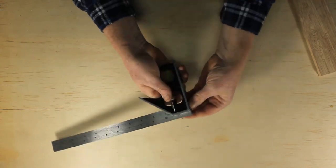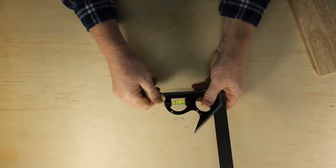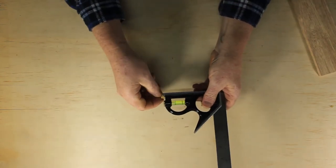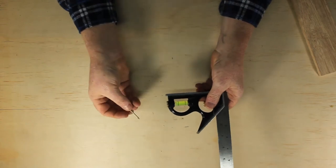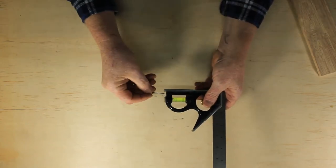This particular one also includes a spirit level and a tiny scriber. You use the scriber to scratch lines where you would otherwise use a pencil.